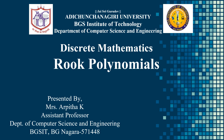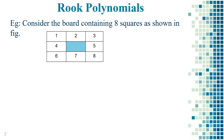This is the second video under polynomial and in this video I'm going to solve the next example. Consider the board containing eight squares as shown in the figure, which is from 1 to 8. So R1 is equal to N is equal to 8, that is there are eight possible positions available for the placement of the pans.